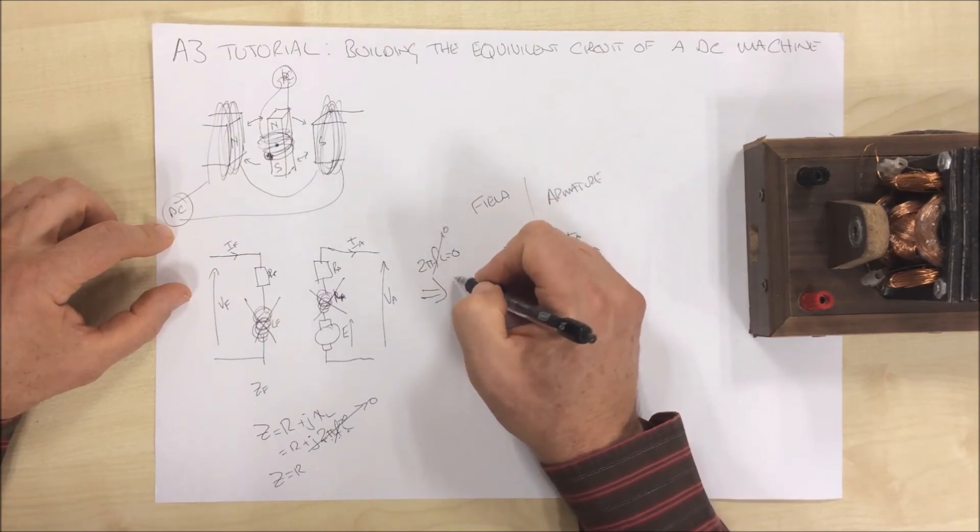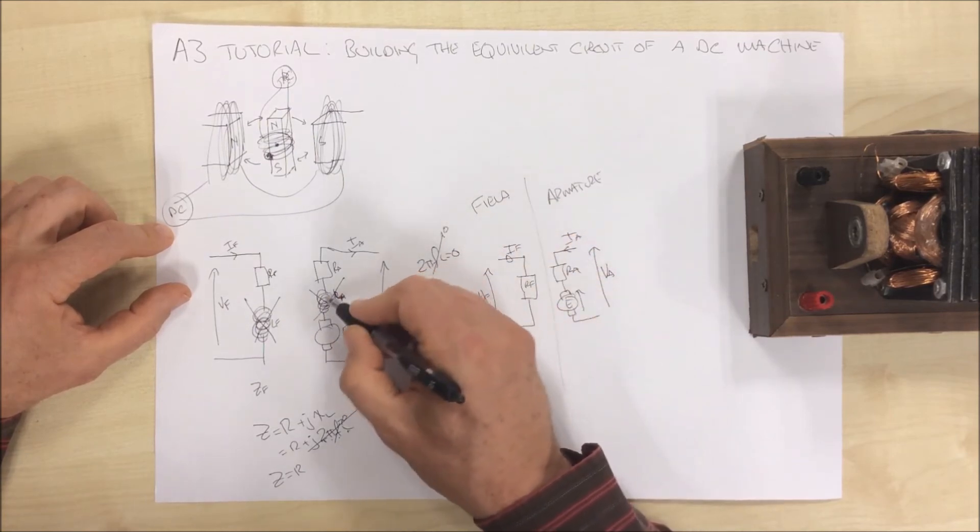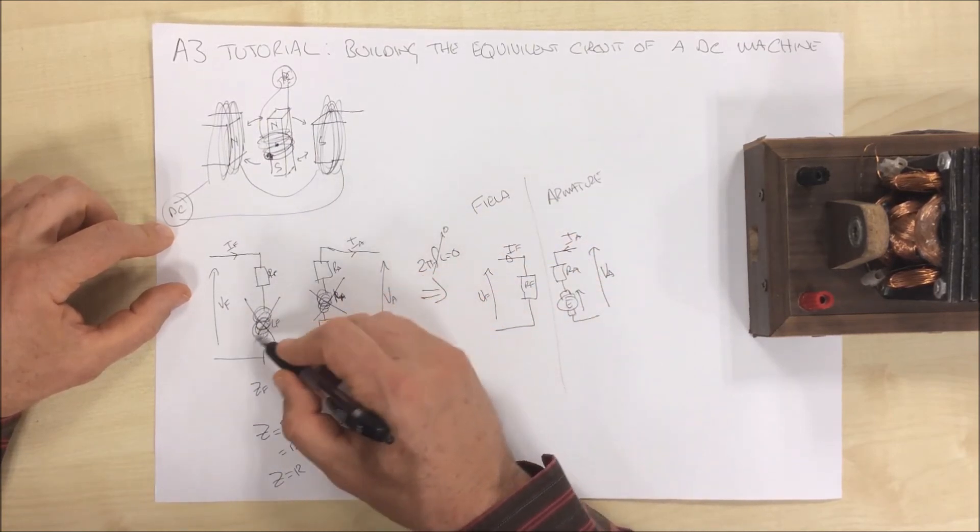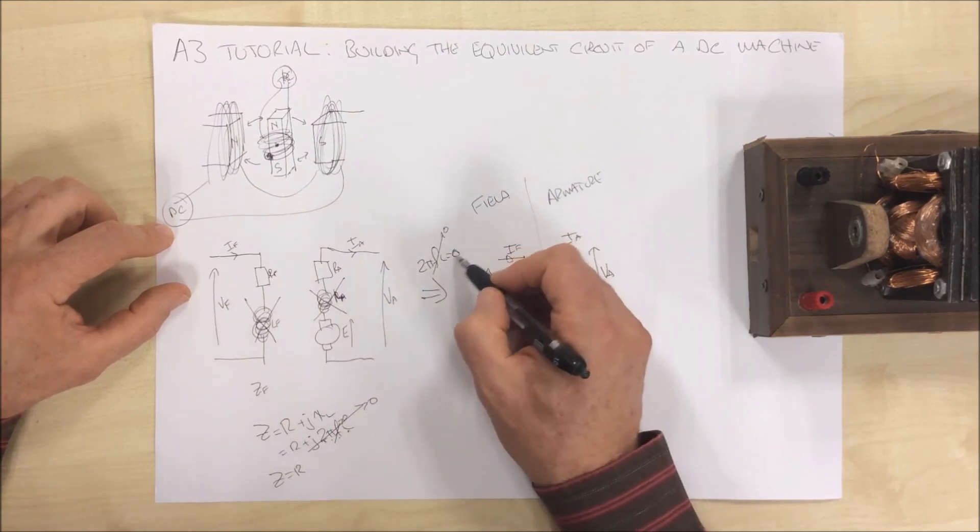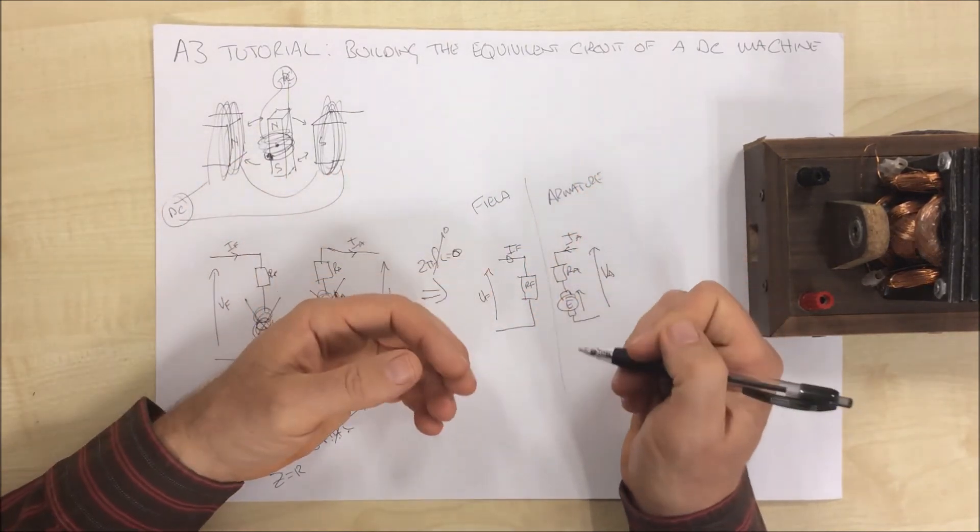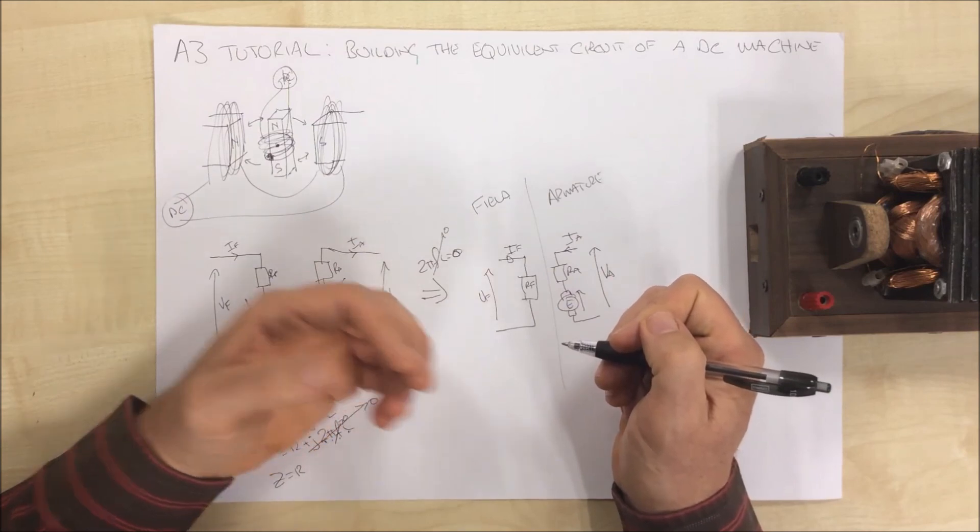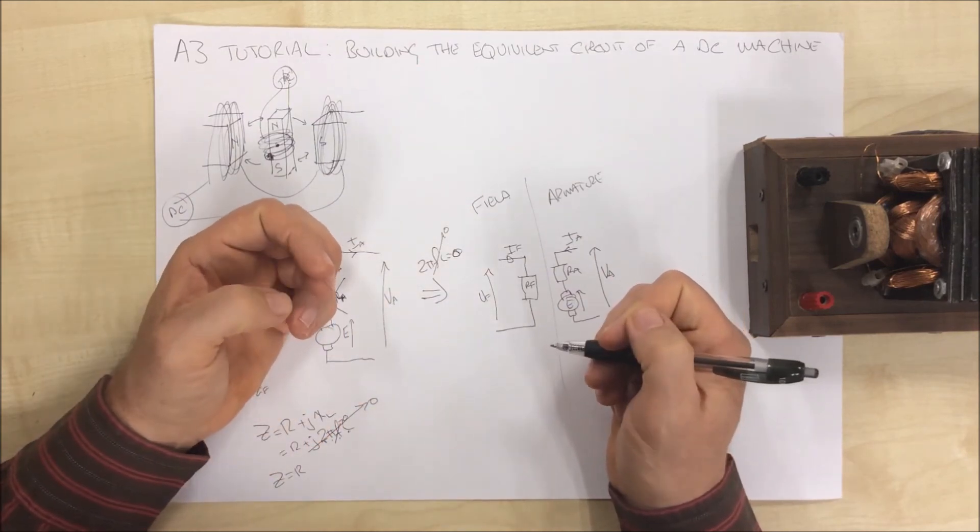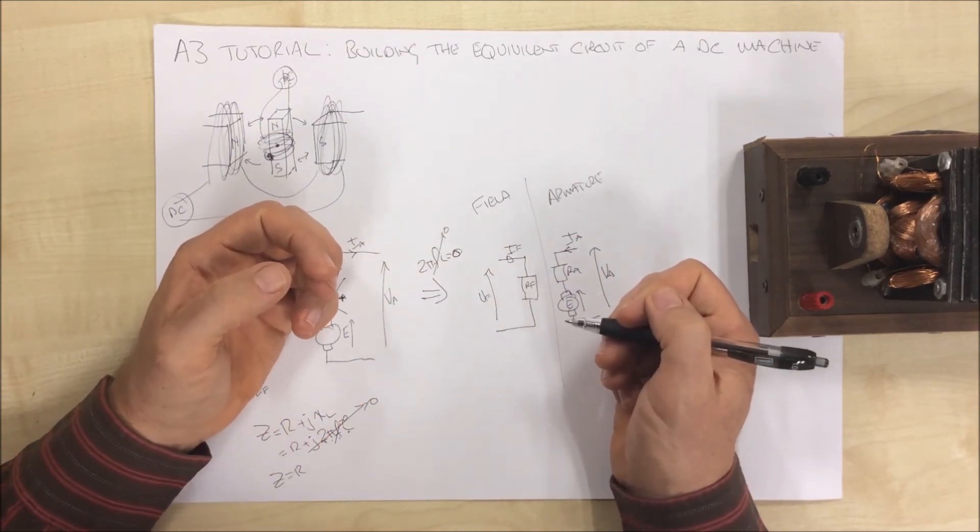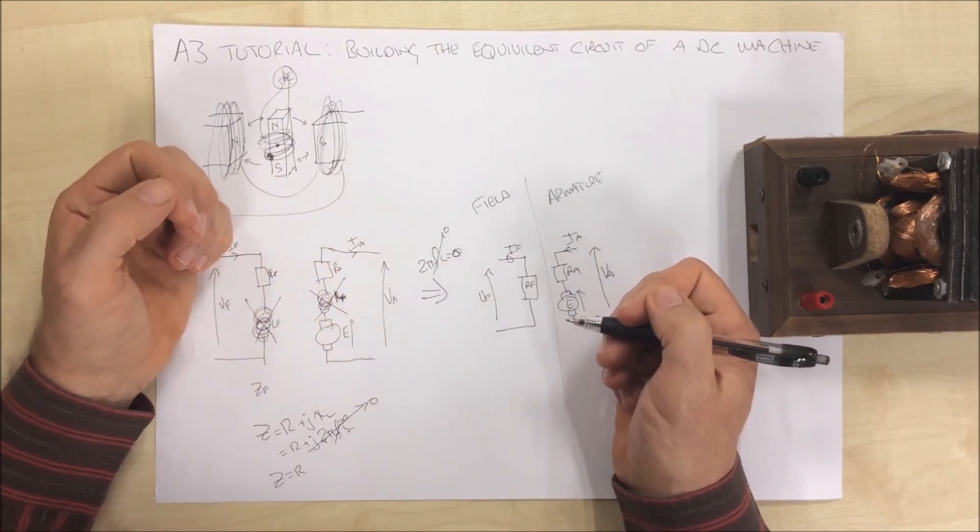So all the inductive component goes to zero. That's all we need to know. Thank you for watching. Keep an eye out for my next videos on these DC machines. And I hope you have a good day. Thank you.